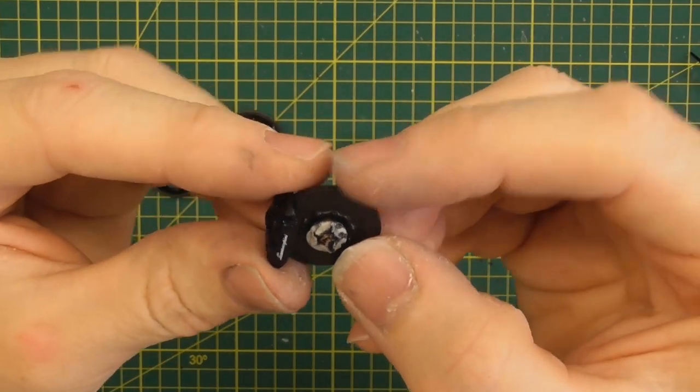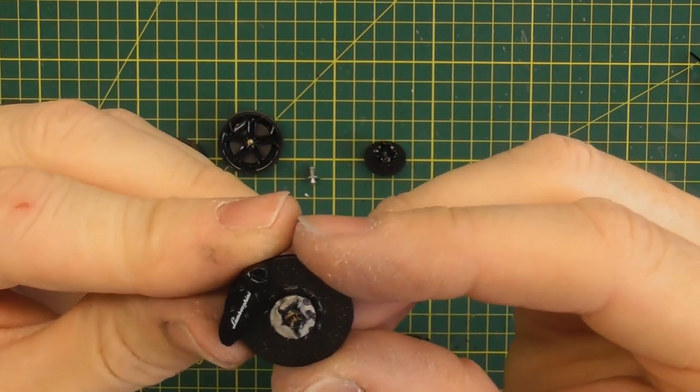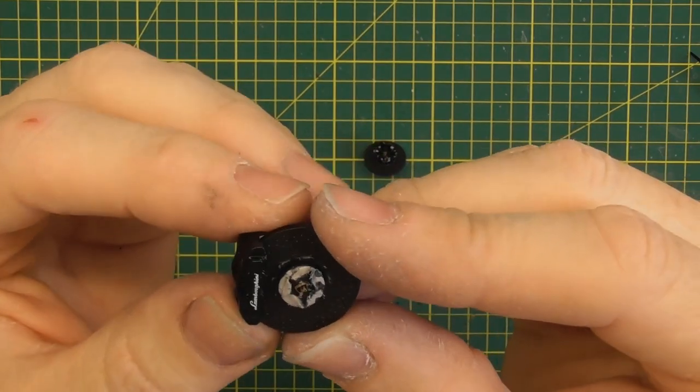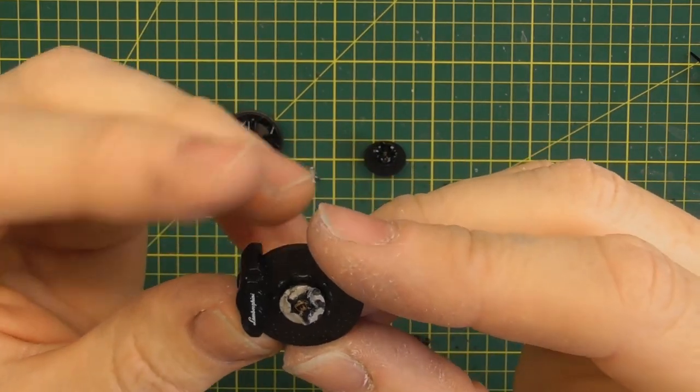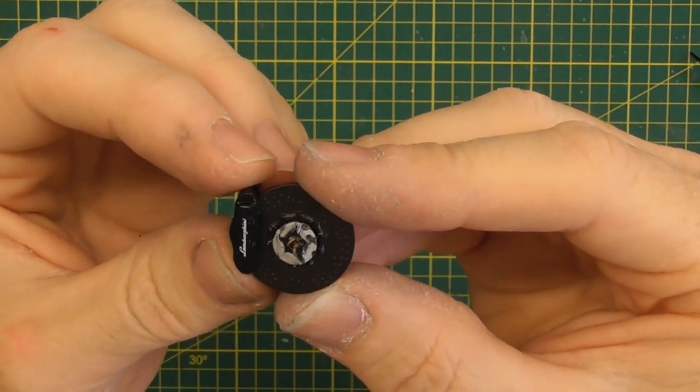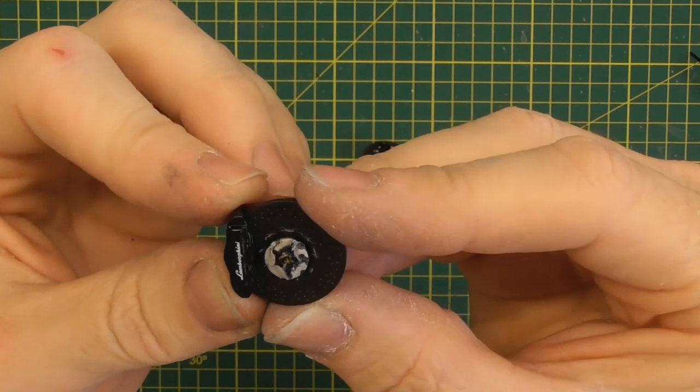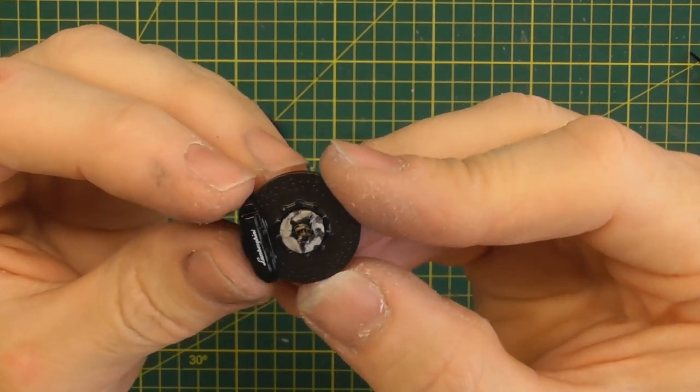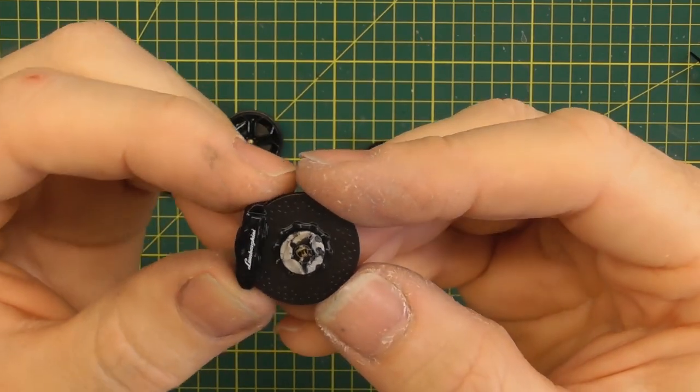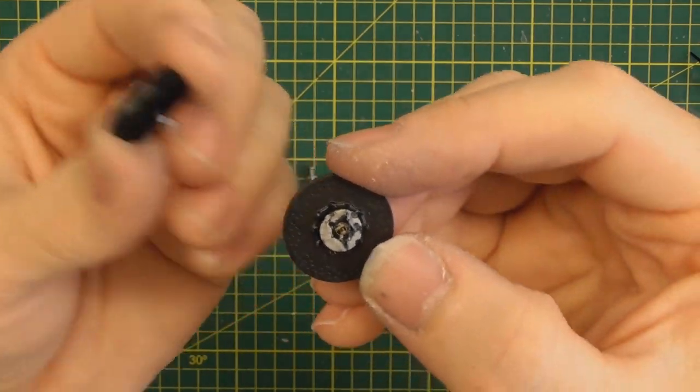But that is my short video on how you cannot remove Auto Art wheels from the hubs without damaging them. So I hope this video has been informative for all you custom builders out there that have never been able to pull Auto Art wheels and hubs apart without severely damaging them, and that will explain why.